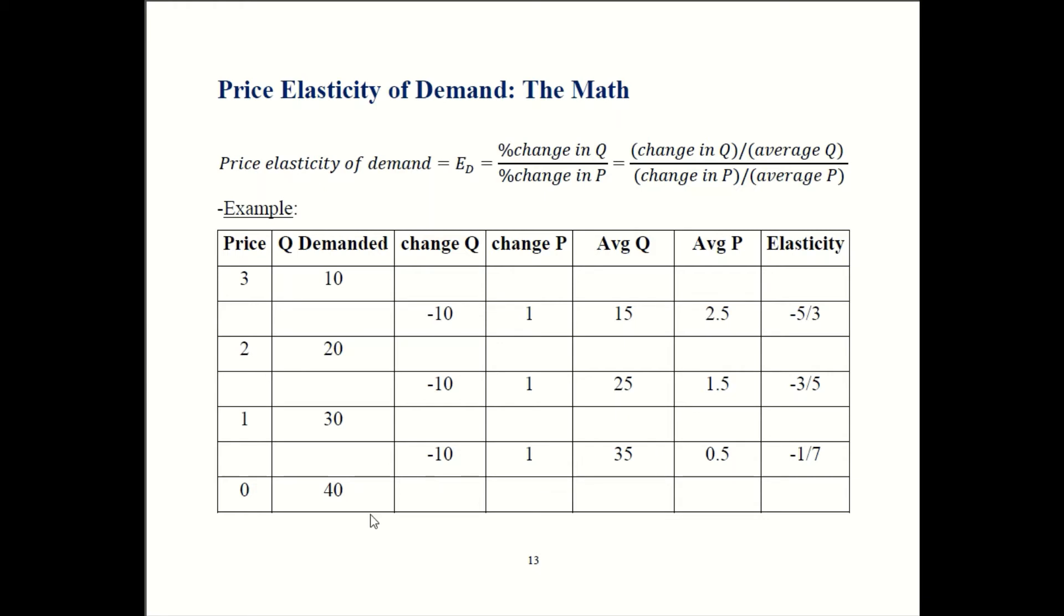Last part of our example. So we're going to look at these two points over here. Quantity goes down by 10. So going from 40 to 30 is a decrease of 10. Price goes up from 0 to 1. So change in P is positive 1. We average together those two points, 30 and 40. That gives us 35. We average together the prices, 0 and 1. That's 0.5. Last step, we do change in Q over average Q and change in P over average P. Change in Q over average Q is minus 10 over 35. So that'd be minus 2 over 7. Minus 2 over 7 divided by 2 is minus 1 over 7. So there's your elasticity.